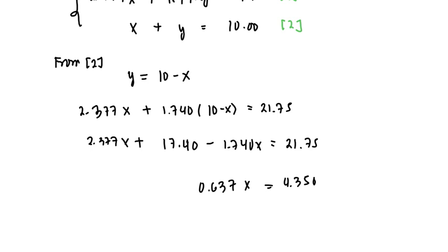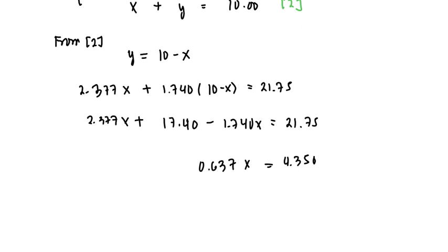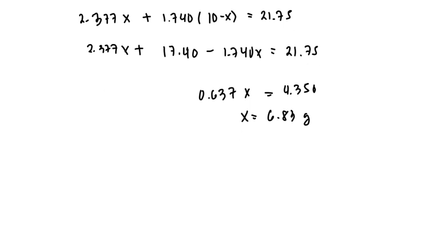We divide both sides of the equation by 0.637, and we get x to be equal to 6.83. It follows that y will be 10 minus 6.83, which is 3.17.